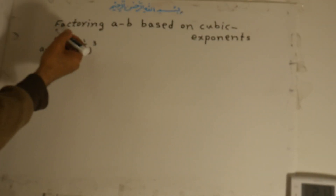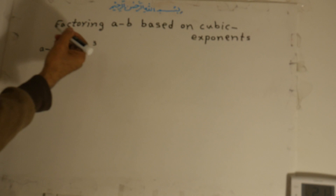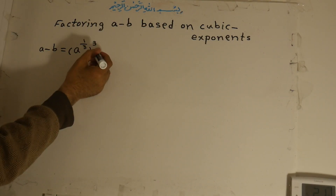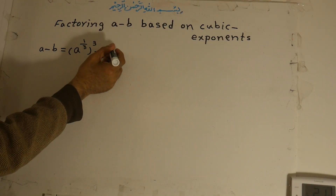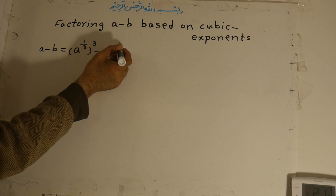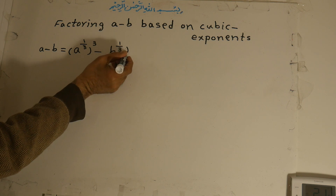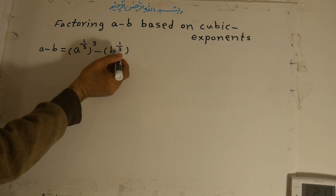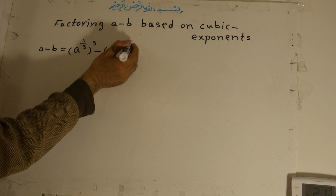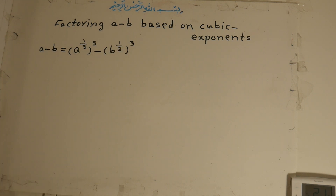This means we multiply: one-third times three equals three-over-three, which equals one. So a to the power of one is a. Minus b to the power of one-third, all to the power of three. This is the cubic exponent form.